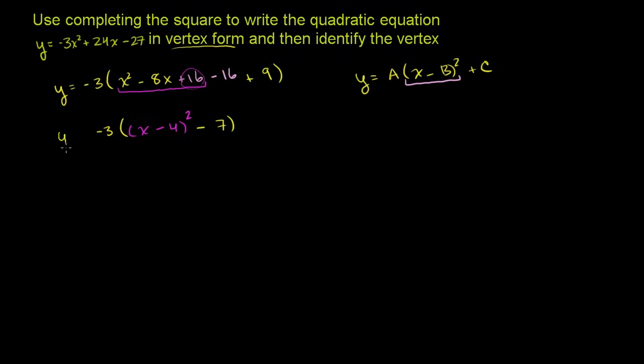So we're almost there. We have y equals negative 3 times this whole thing. Not quite there. To get it there, we just distribute the negative 3 onto both of these terms. So we get y equals negative 3 times (x minus 4) squared, and negative 3 times negative 7 is positive 21. So we have it in our vertex form. We're done.